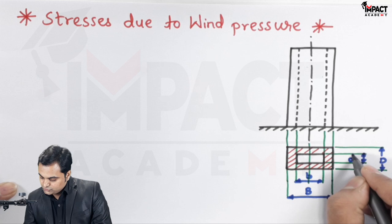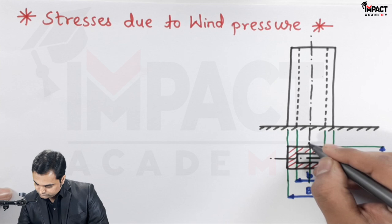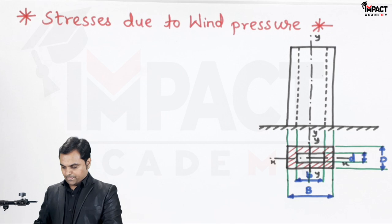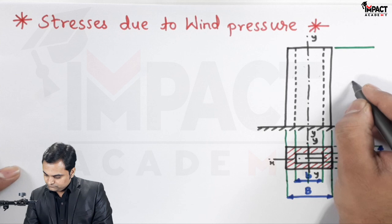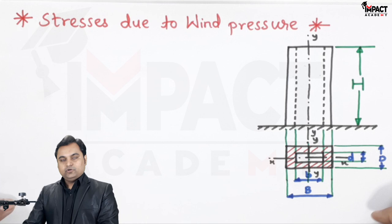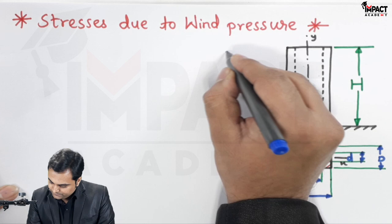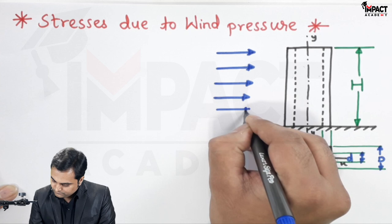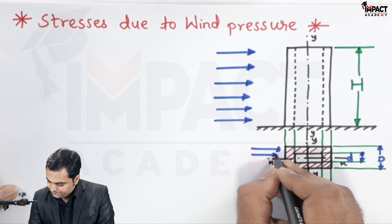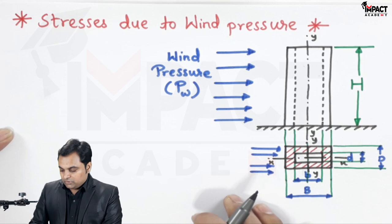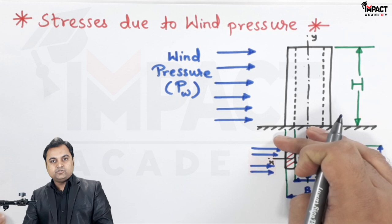Similarly, the outer depth is capital D and inside depth is small d. These are the axes: Y-axis and X-axis for this column cross-section. The height of the column is capital H. It is subjected to wind pressure from one side — the direction I am assuming that wind is flowing is shown here, and similarly in the top view. Wind pressure p_w is acting on one face of the column, which I will call face AB.